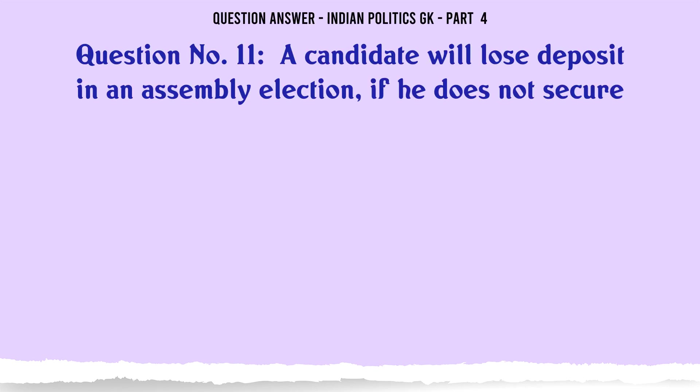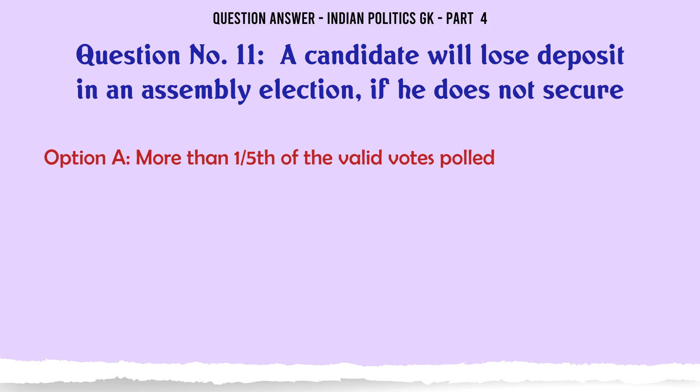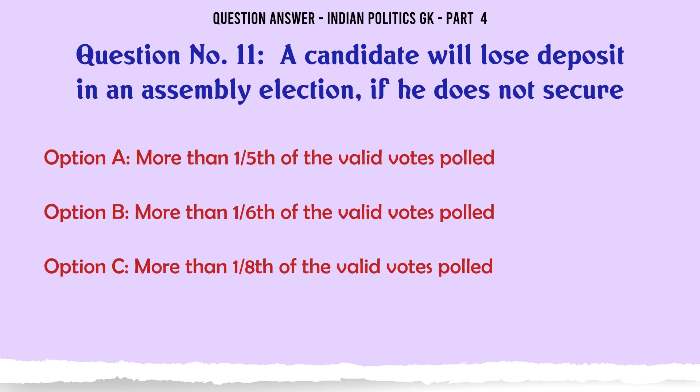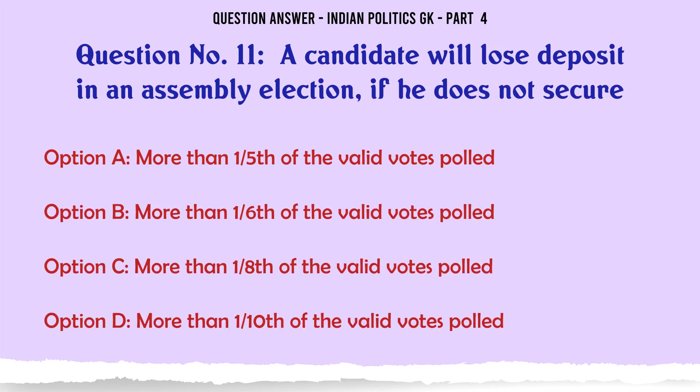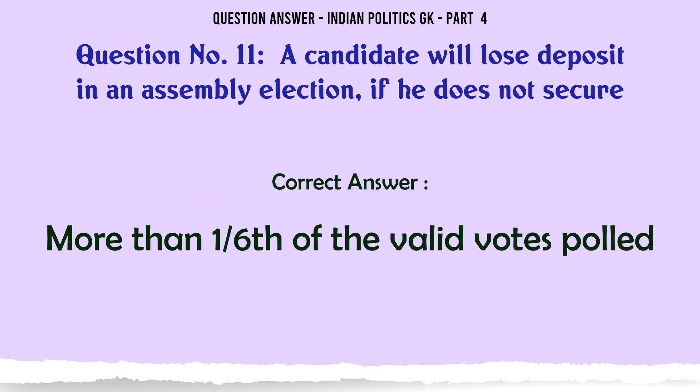A candidate will lose deposit in an assembly election if he does not secure more than: A. 1/5th of the valid votes polled. B. 1/6th of the valid votes polled. C. 1/8th of the valid votes polled. D. 1/10th of the valid votes polled. The correct answer is more than 1/6th of the valid votes polled.